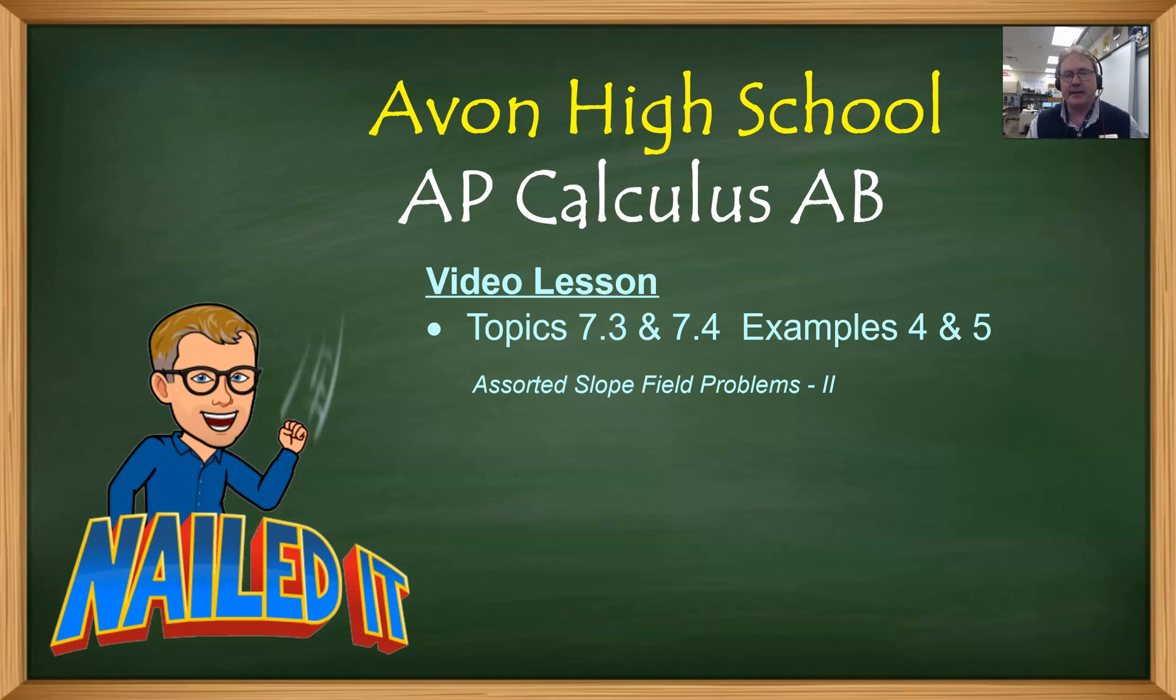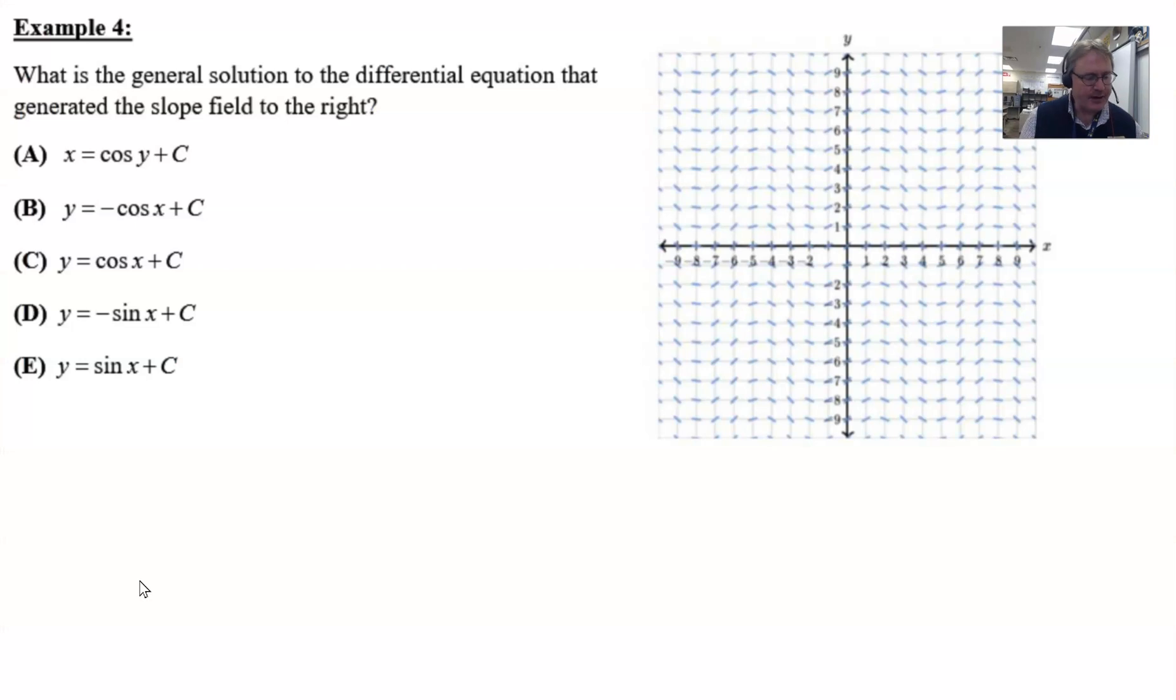Greetings again, my AP Calc AB friends. We're looking at our last video that covers the combination topics 7.3 and 7.4, really all things dealing with slope fields. And then after this, we're going to move into the nitty gritty of Unit 7—how to solve differential equations. It's hard to believe, but you're kind of at the halfway point of Unit 7. It feels like we just began. So let's take a look at a couple of examples, assorted slope field problems.